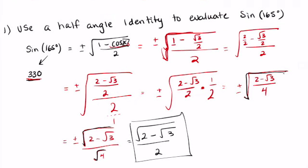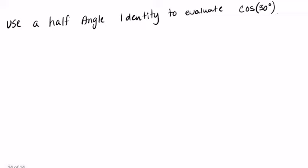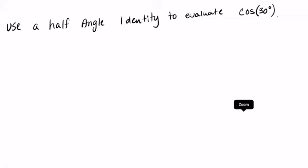Let's try one more. This time we're going to use a half angle identity to evaluate the cosine of 30 degrees. In this one again, I have the cosine of 30 degrees, yet I'm going to multiply whatever that angle is by 2, which is going to be me utilizing it as 60 degrees.